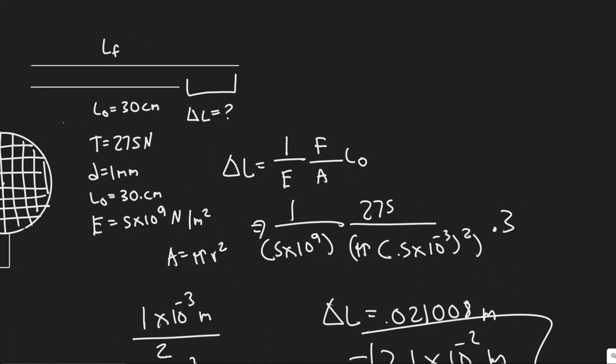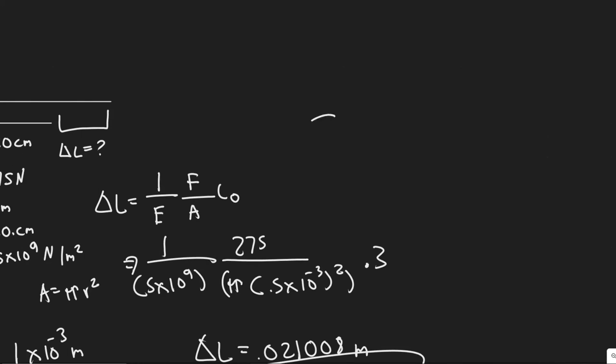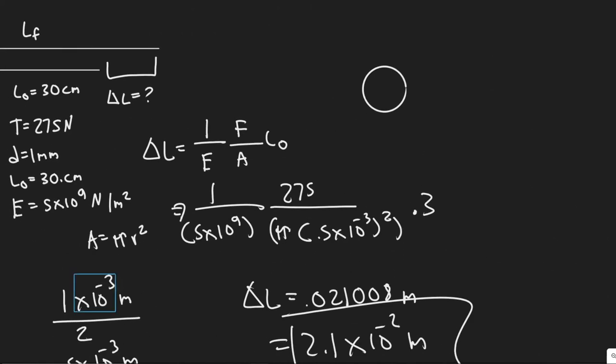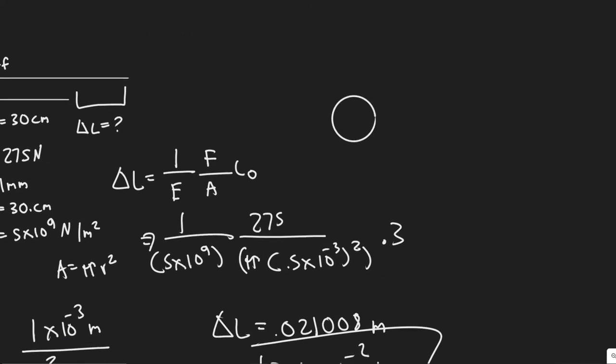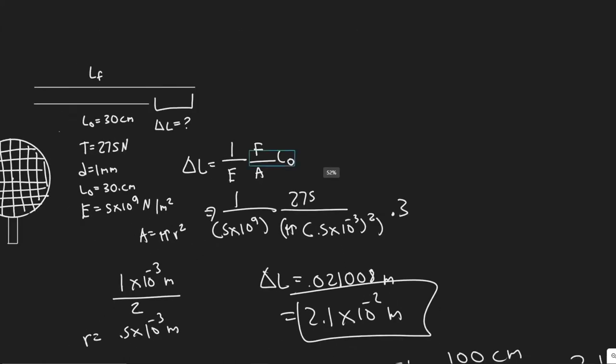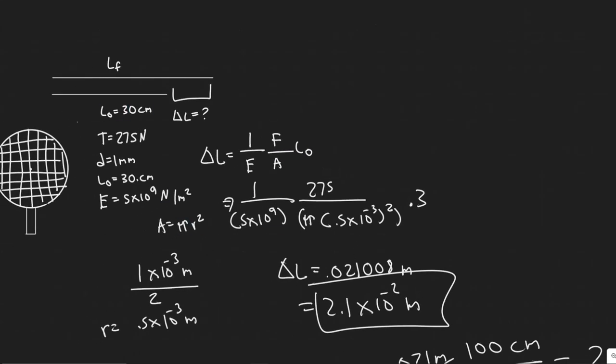Divided by the force over the cross-sectional area. So this one was a string, so we just assumed it was circular. So we know the area of a circle was pi R squared. So that's why we use that. And then L0 or L initial is just the length, the initial length.